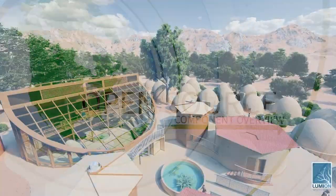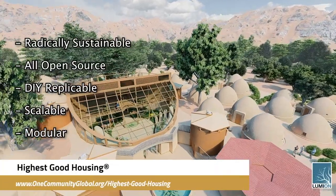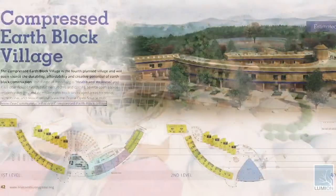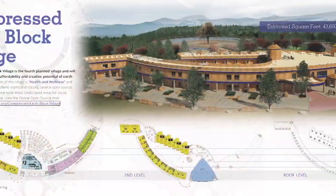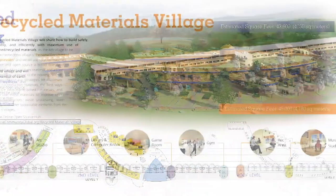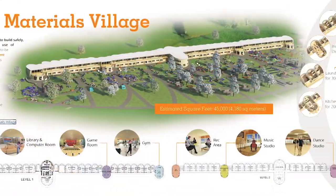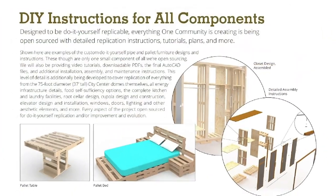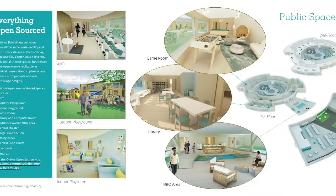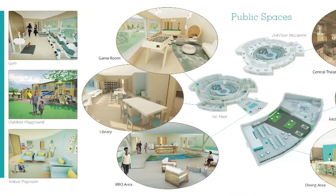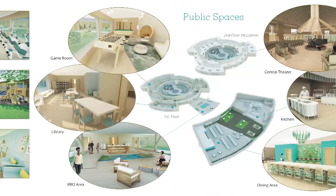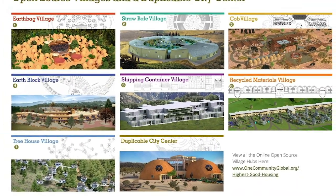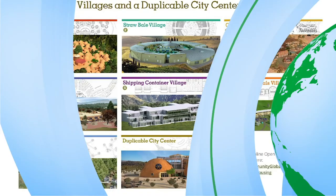The One Community approach to highest good housing is eco-artistic home building that is affordable, sustainable, do-it-yourself duplicable, resource and space efficient, and consists of seven different sustainably constructed village models.